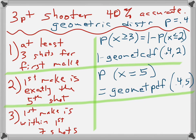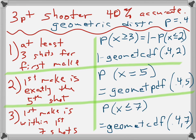Then the last one is the first shot is within the first seven shots. So, that means the seventh shot is acceptable. So, that means the probability that X is less than or equal to seven. Which is geometric CDF, cumulative density function 0.4, 7. All right.